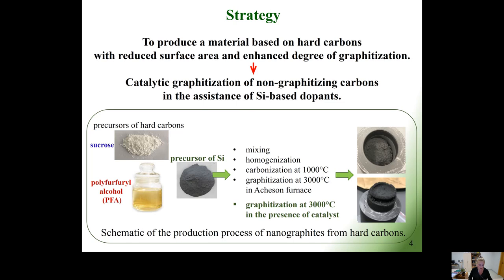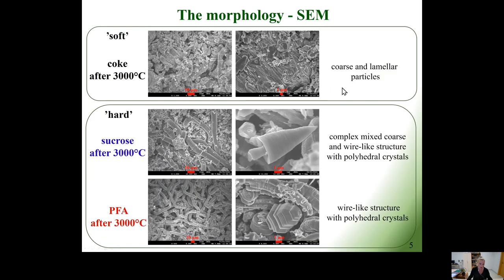So let's verify it. Here you can see the differences in the morphology of soft and hard carbons graphitized in the presence of silicon vapor. Coke forms irregular lamellar-like particles, while non-graphitizing carbons from sucrose and polyfurfuryl alcohol polymer form wires and various polyhedral crystals.